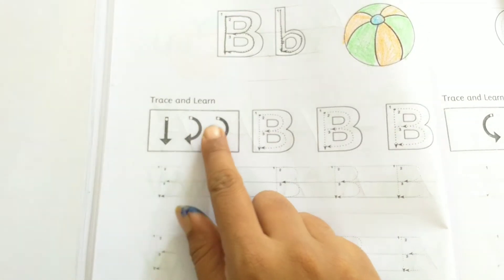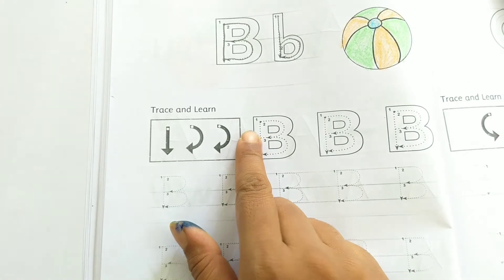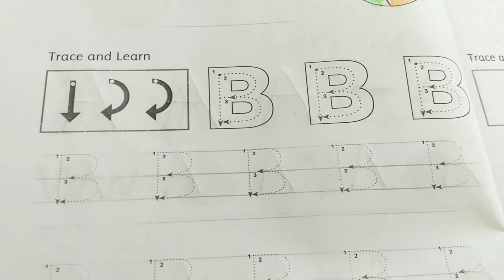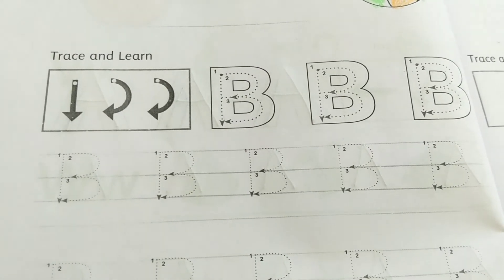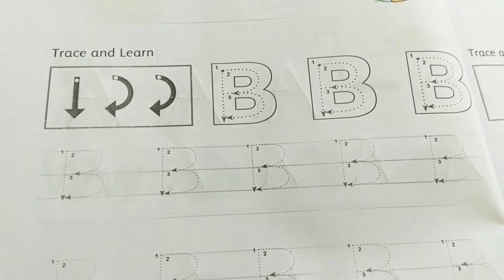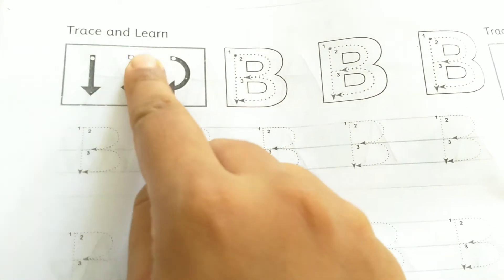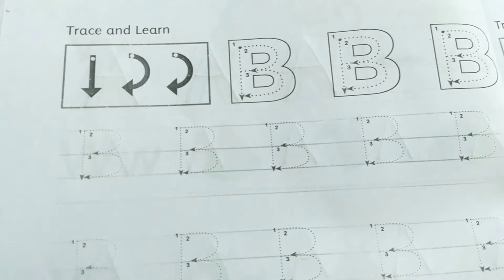Next, trace and learn. Here you can see that letter B is made up of one standing line and two backward curves.